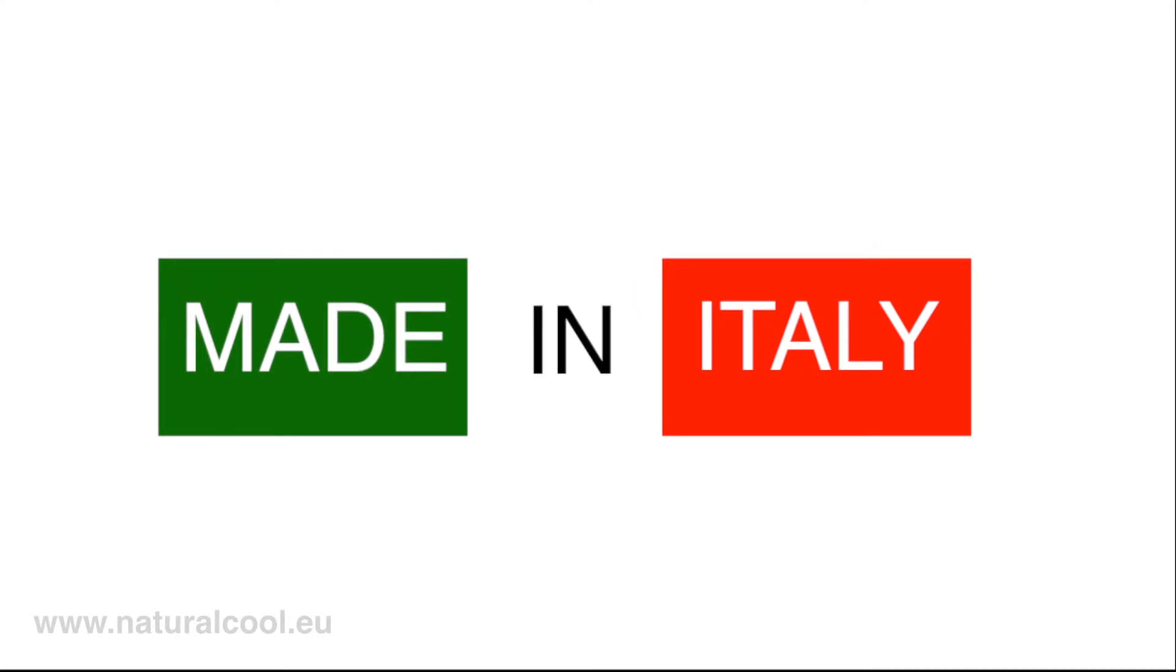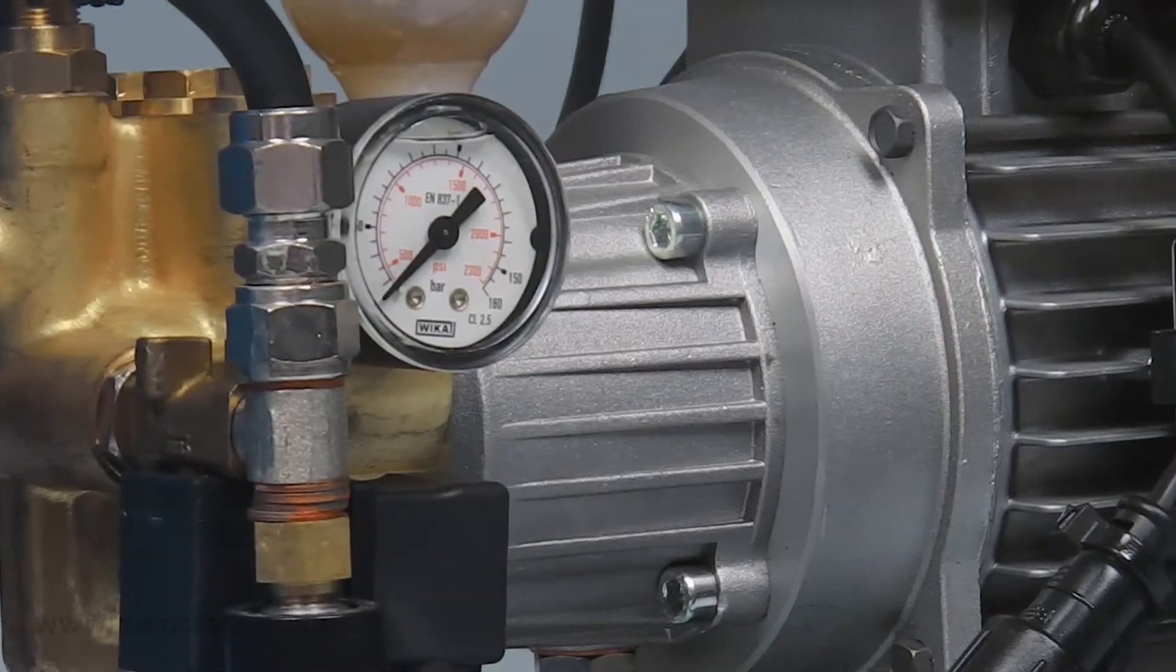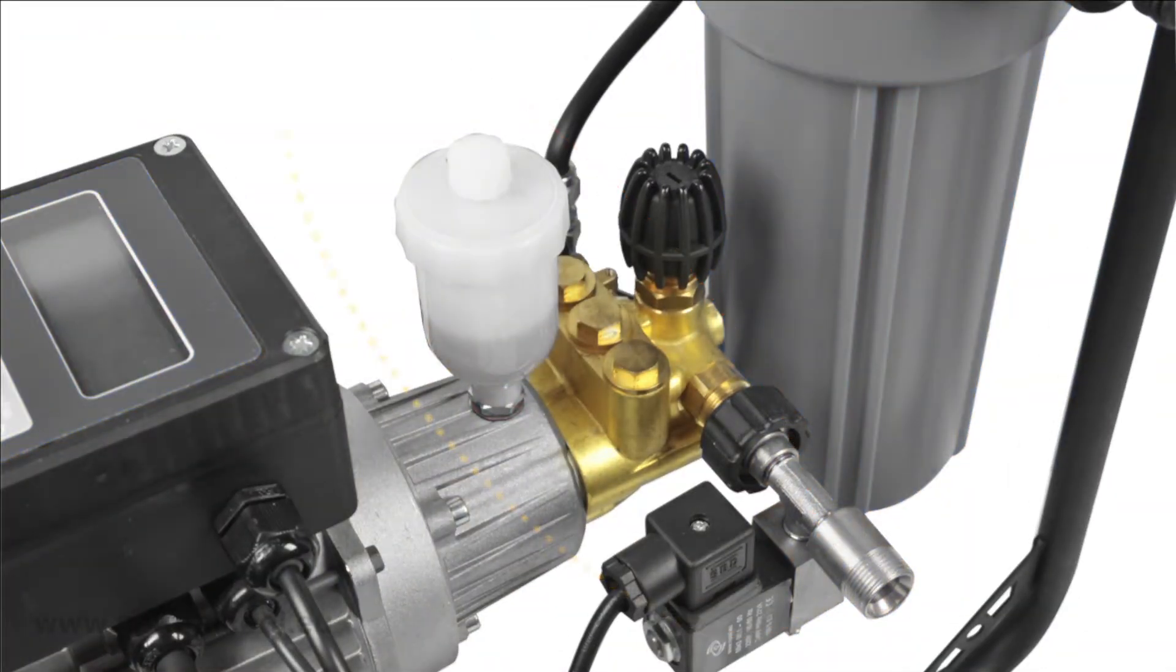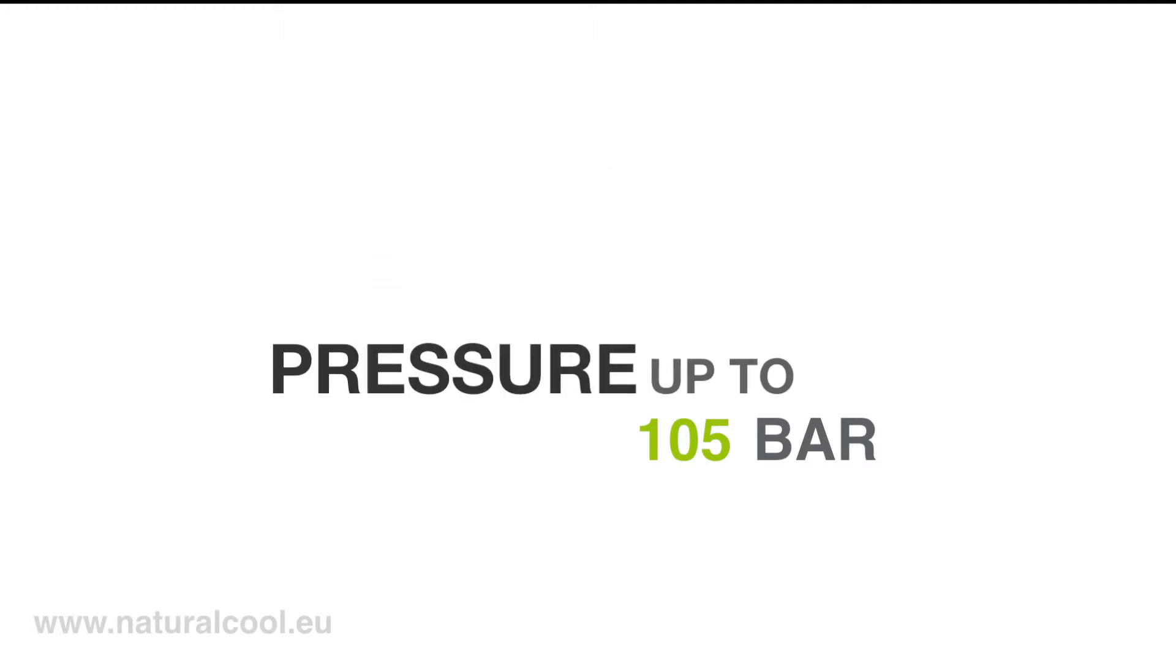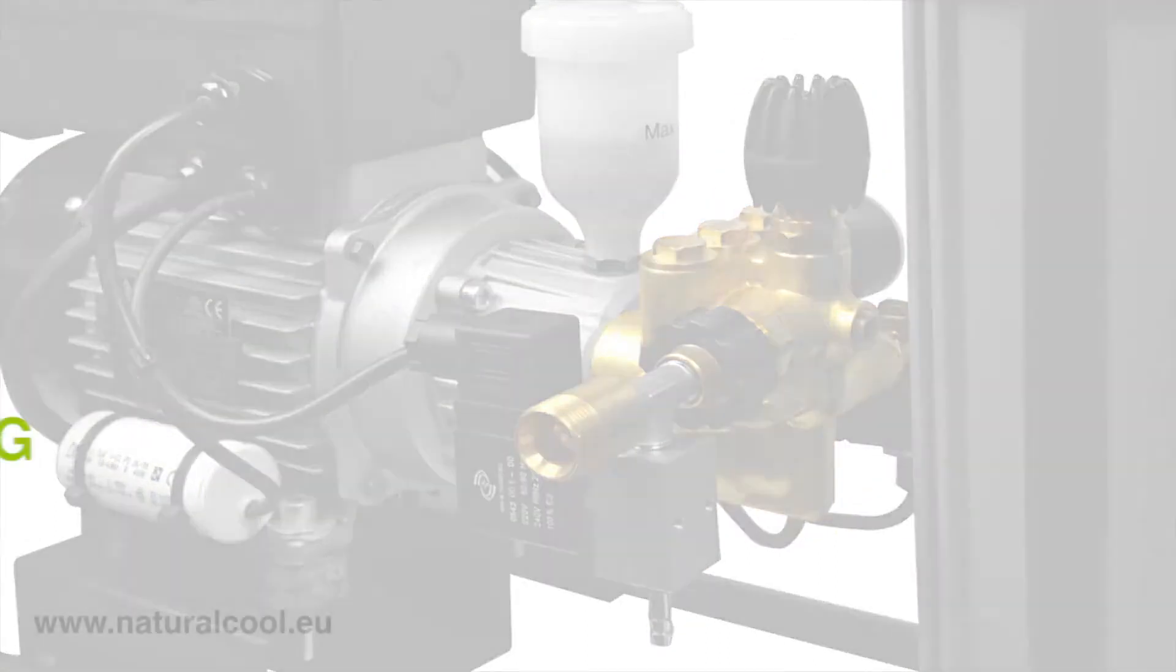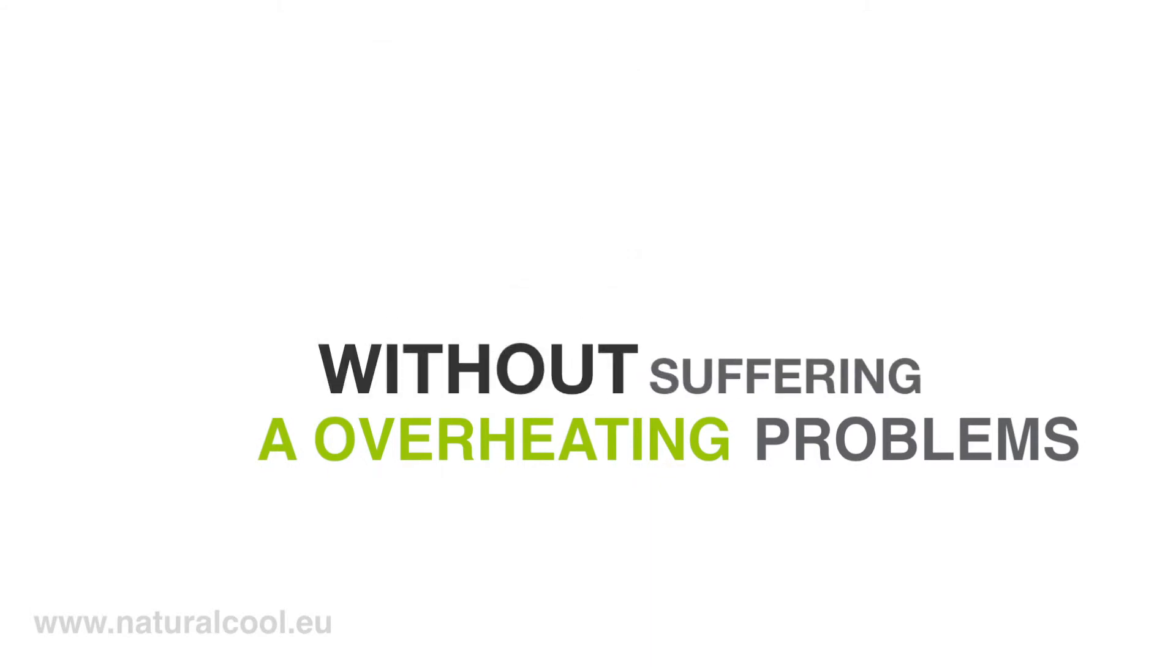EcoEvo has a distinctly Italian strong heart. A pump specially designed for the atomization of water that can work at a pressure of up to 105 bar. Thanks to a flow rate valve, this pump can work at a very low capacity without suffering overheating problems, a phenomenon known as bypass.